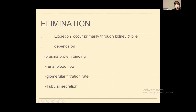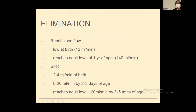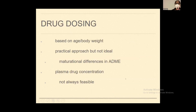Elimination and excretion occurs through the kidney and bile, depending mainly on renal blood flow and glomerular filtration rate. These are all altered in the first two years of life. Renal blood flow is low at birth and reaches adult values at one year of age. Similarly, GFR is low at birth — around 2 to 4 ml per minute — and reaches the adult level of 120 ml per minute by three to five months of age. All these factors will affect drug concentration in the body.